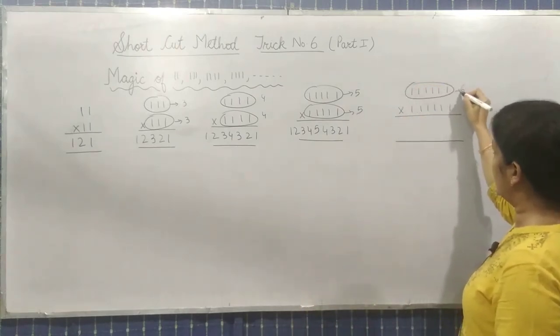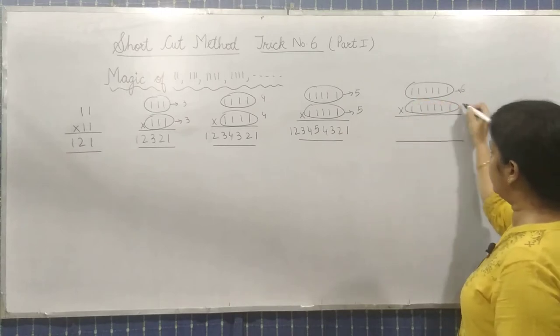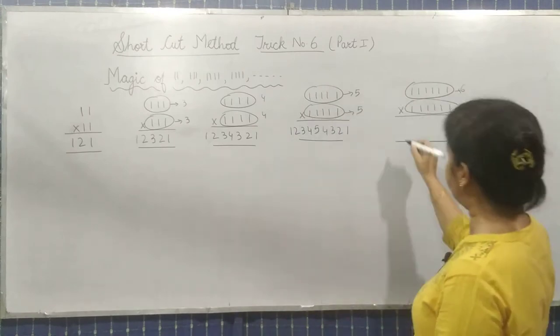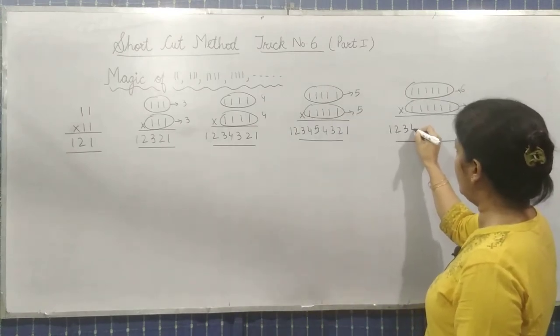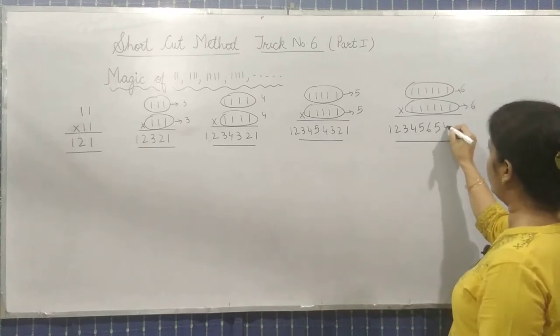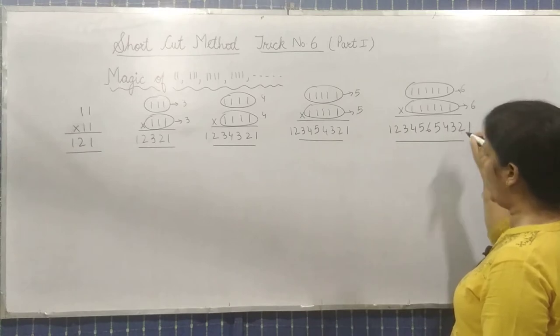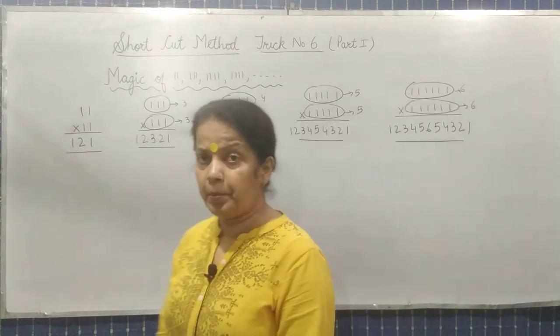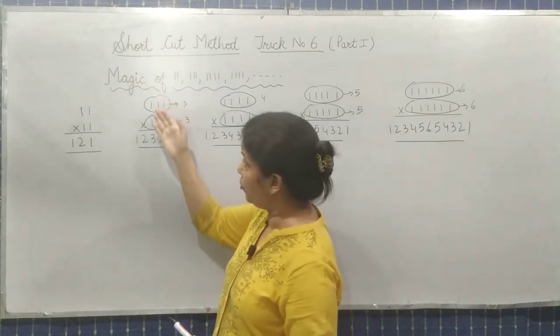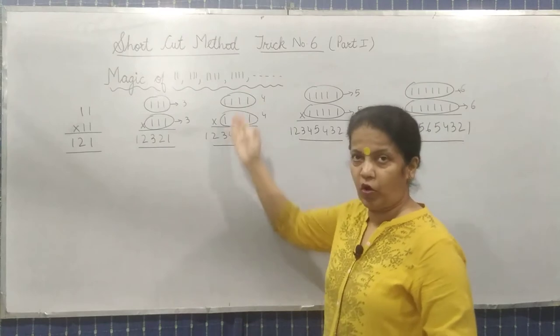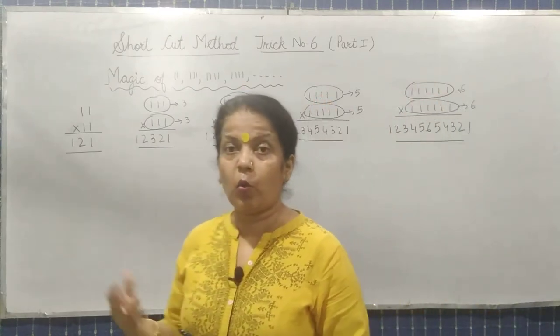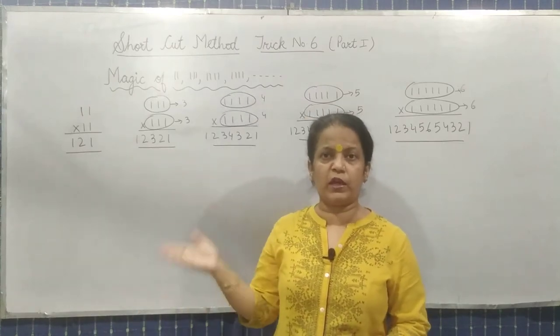This is 6 and this is also 6. Number of 1's are 6. So what should be the answer in 1's line? 1, 2, 3, 4, 5, 6. And then 5, 4, 3, 2, 1. So this is the answer. But you must be wondering,